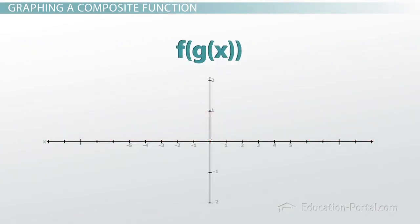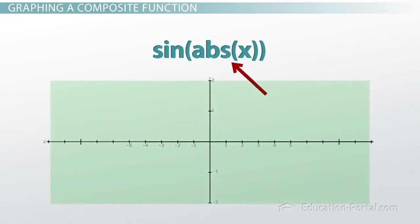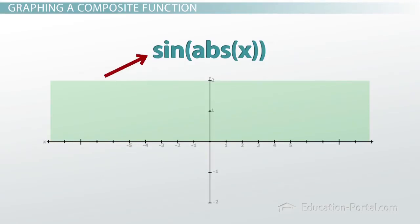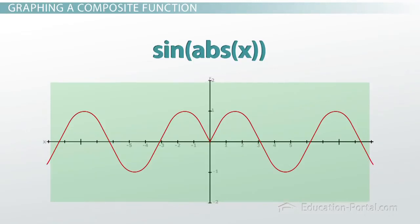Now consider f of g of x, which is sine of the absolute value of x. The absolute value of x accepts anything, so the domain is all x. Its range is zero and up — any positive number. Sine can accept anything, so that constraint is satisfied. Graphing this composite, the range is anywhere between minus 1 and 1, which is just the range of f of x.